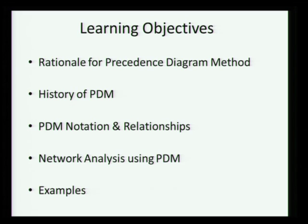In this lecture, we will cover the precedence diagramming method, which is an alternative to activity on arrow. Activity on node is the second method, and the third method we call precedence diagramming. We will cover the rationale, the history, the notation and relationships, which are very important. We will do network analysis using the precedence diagramming method and then work out some examples.